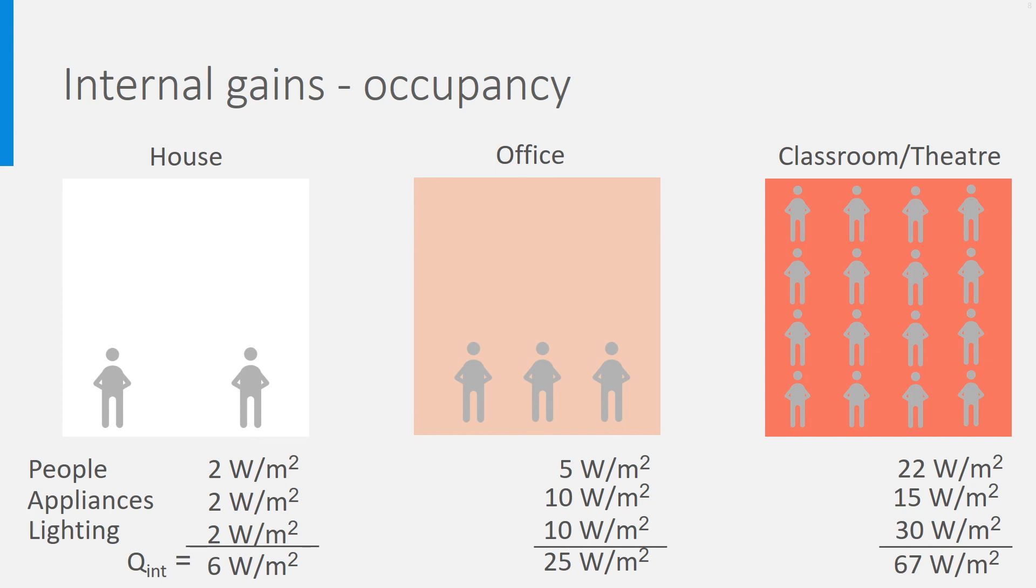Next to this, we have appliances and lighting, which both are powered by electricity. But because of the law of conservation of energy, this electricity finally ends up as heat in the room.